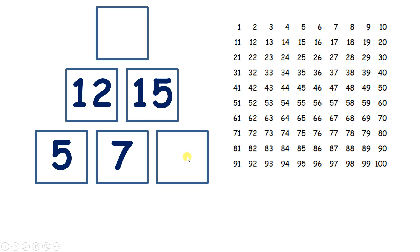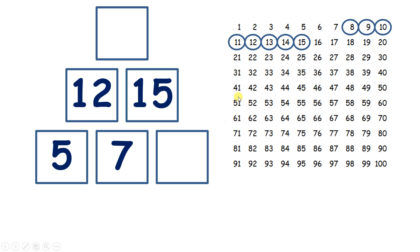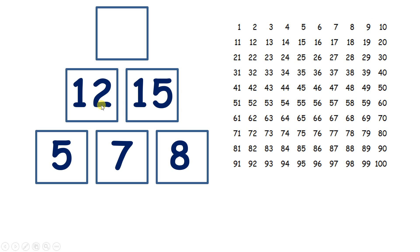And now we have seven plus something makes 15. So let's start on 15 and subtract one, two, three, four, five, six, seven, and that gives us eight. Now we need to add 12 and 15. So if we start on 15, we're adding 12 — one 10 and two units. So we move down one to add 10, and then two places to the right to add our two units. So we have 27.